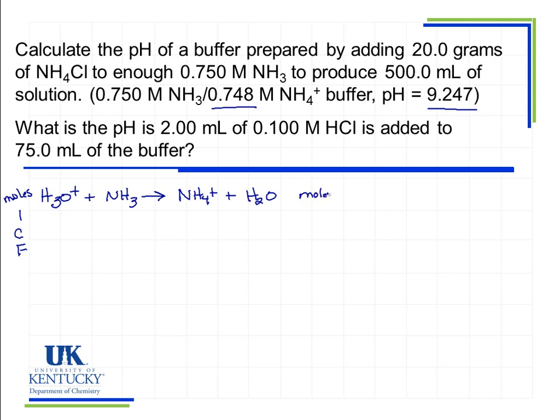Let's begin with the moles of H3O+. The moles of H3O+ would be the same as the moles of HCl. If I know the molarity of HCl, which is given in the problem, and the volume, which is 2.00 mL, the moles will be 0.0002 moles.